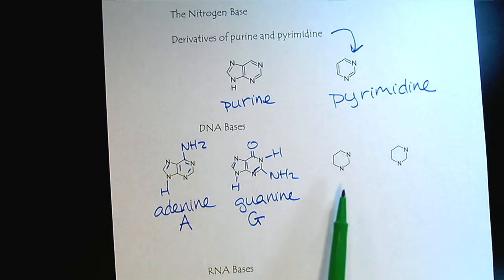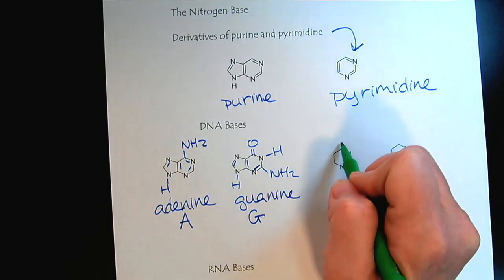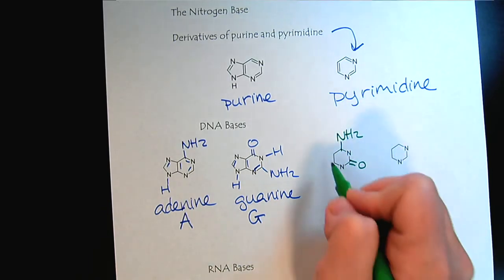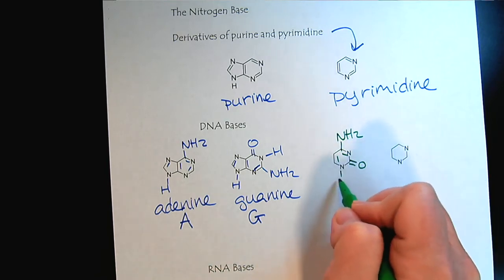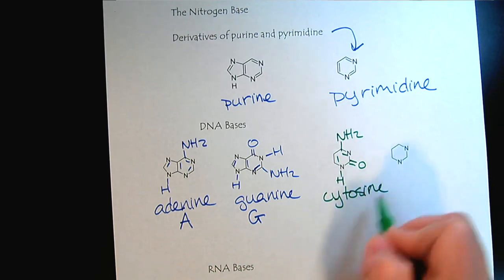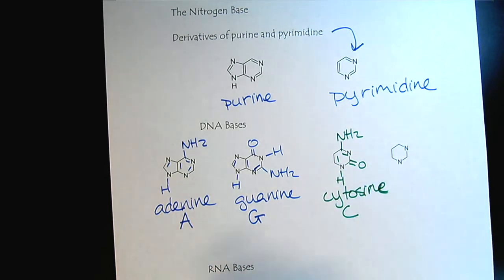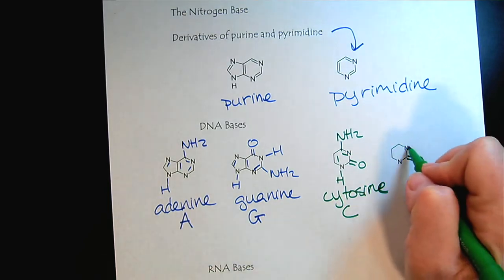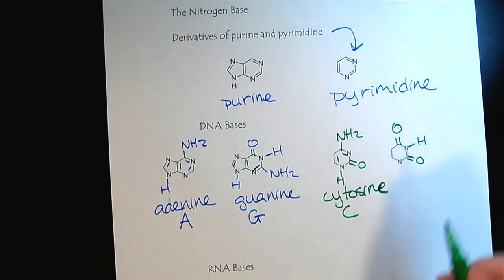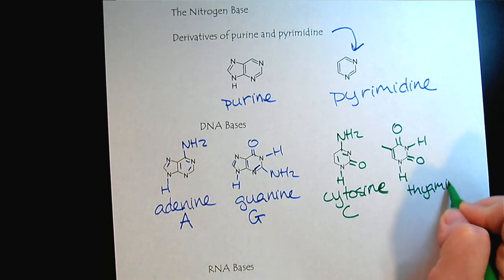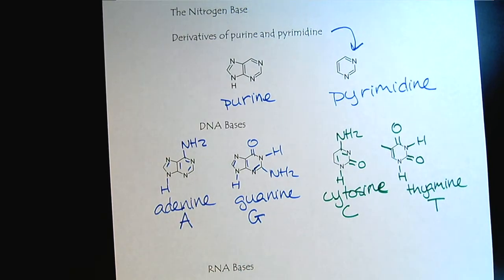Now we'll look at the pyrimidine derivatives. The first one, cytosine, also has an amide feature. We'll symbolize that with a C. And then we have thymine, which also has that amide feature and has a methyl group coming off. This is thymine, symbolized with a T.